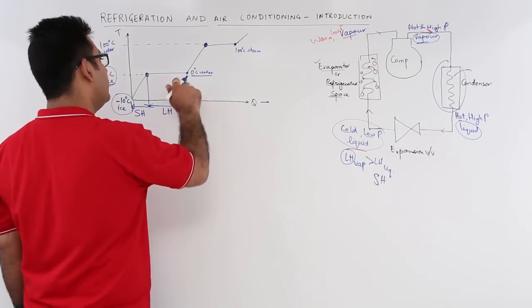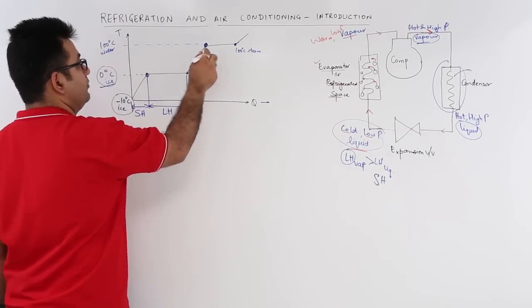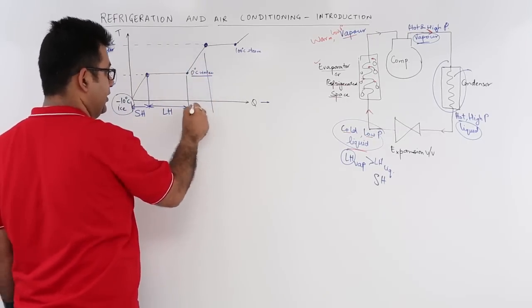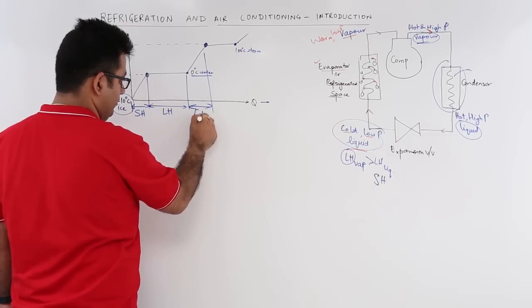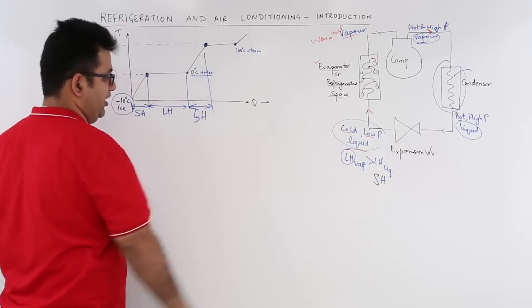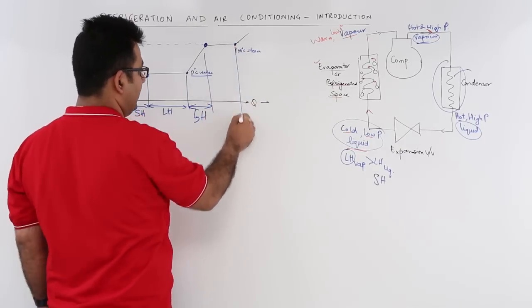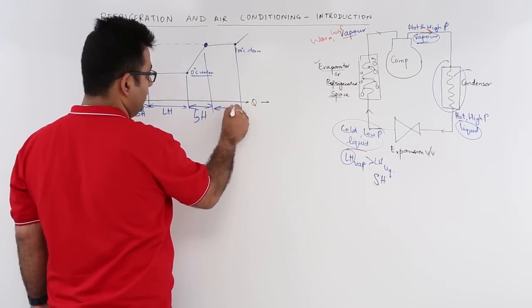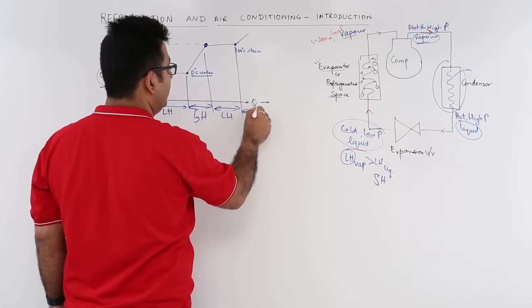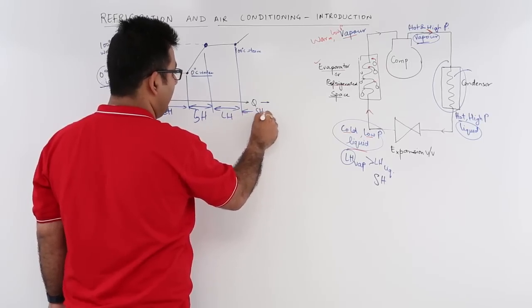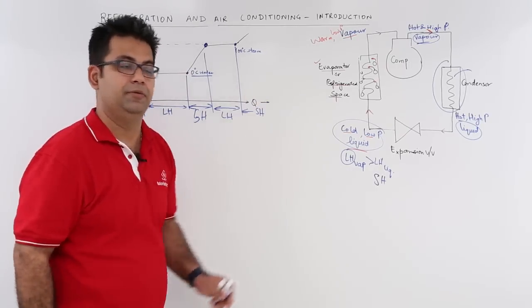We go from 0 degree Celsius water to 100 degree Celsius water — again temperature change but no phase change, so it becomes sensible heat. And again the transition at 100 degrees becomes latent heat. Whatever heat you add after that is all sensible heat.